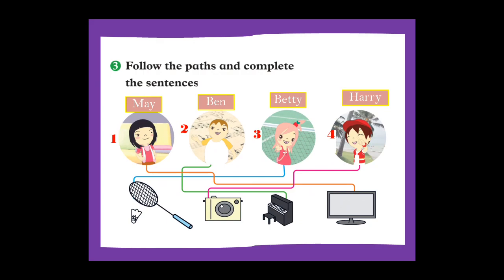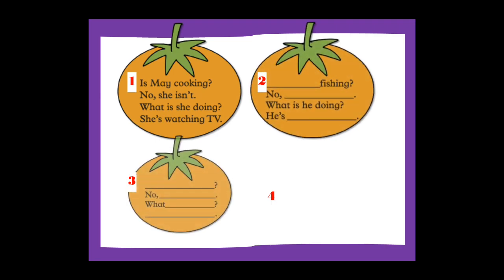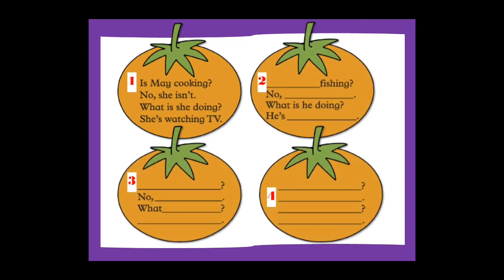Number three: Betty — try to find out what Betty is doing. She is playing badminton. She is playing badminton. Very good. And the last one: Harry — what is he doing? He is taking photos. He is taking photos.